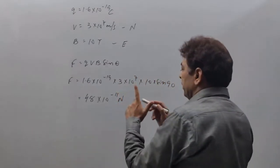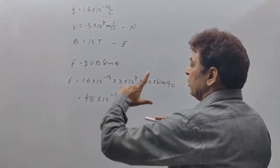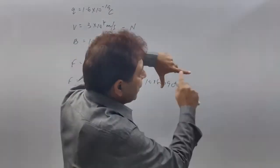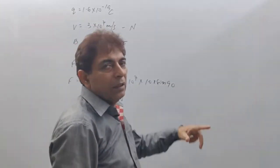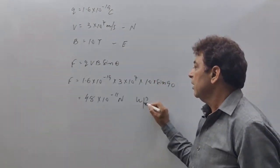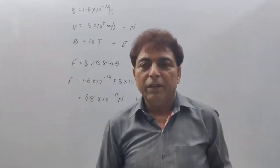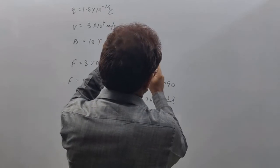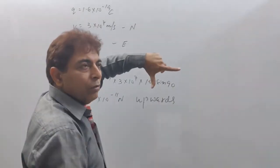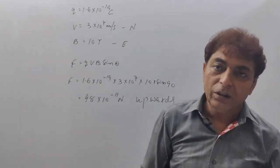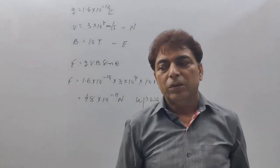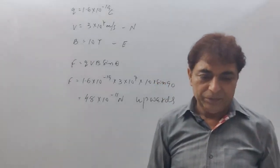The electron is moving towards north and the magnetic field is directed towards east. For a positive charge, the force would act downwards. But since the charge is an electron (negative charge), the force will act in the opposite direction — that is, upwards.